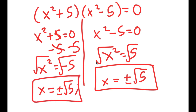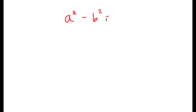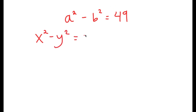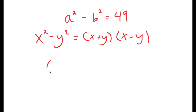So these are my four solutions to this equation. Now in this video, I'm going to solve the equation a squared minus b squared is equal to 49. To solve this, I'm going to use the property that states that if I have something in the form x squared minus y squared, this is equal to x plus y times x minus y. In this case, a squared minus b squared — a is x and b is y — so this turns into a plus b times a minus b is equal to 49.